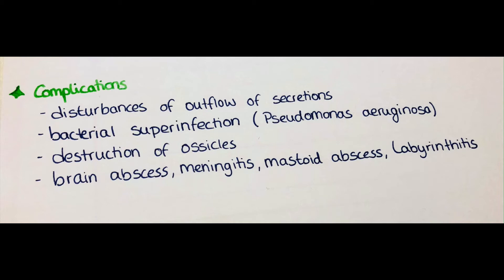Other complications include disturbances of the outflow of secretions, where a clump can develop within the middle ear or at the exit to the external acoustic meatus. Bacterial superinfection, for example with Pseudomonas aeruginosa, is often seen, as well as destruction of the ossicles. More serious complications include brain abscesses, meningitis, mastoid abscess, or labyrinthitis.